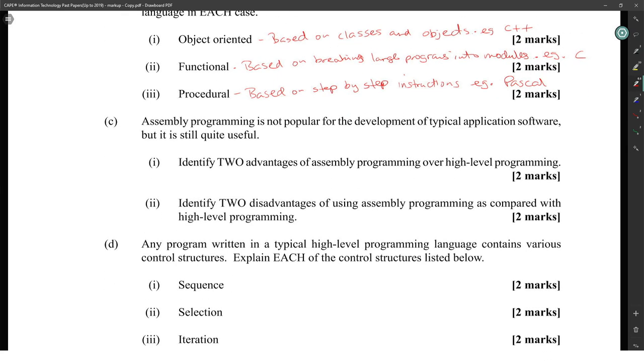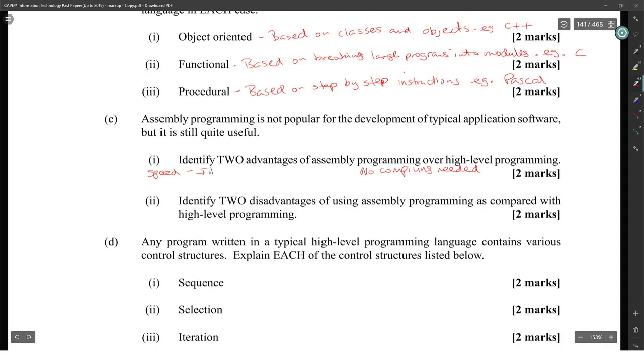Assembly programming is not popular for the development of typical application software, but it is still quite useful. Identify two advantages of assembly programming. It's speed, and no compiling needed. Speed means it has very fast execution time. No compiling needed means there are no issues with translation or compatibility. Identify two disadvantages: complexity, assembly is hard to understand by humans, and portability, it cannot be easily transferred to other systems.